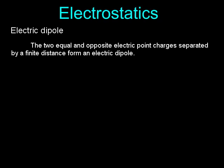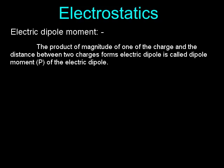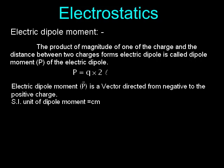Electric Dipole: Two equal and opposite electric point charges separated by a finite distance form an electric dipole. Electric Dipole Moment (P): The product of the magnitude of one of the charges and the distance between the two charges is called the dipole moment. P = Q × 2L. SI unit of dipole moment is C·m.